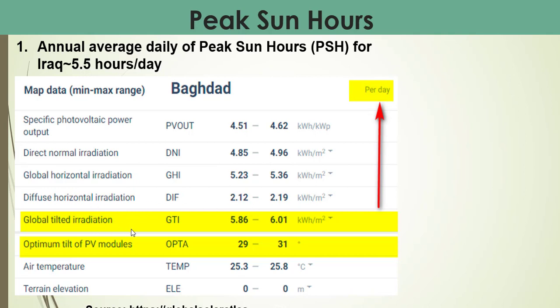The important parameter we focus on is the global tilted radiation (GTI), which is in the range of 5.86 to 6.01 kilowatt hours per meter square, and the optimal tilt angle of the photovoltaic modules is in the range of 29 to 31 degrees. Other parameters include air temperature.